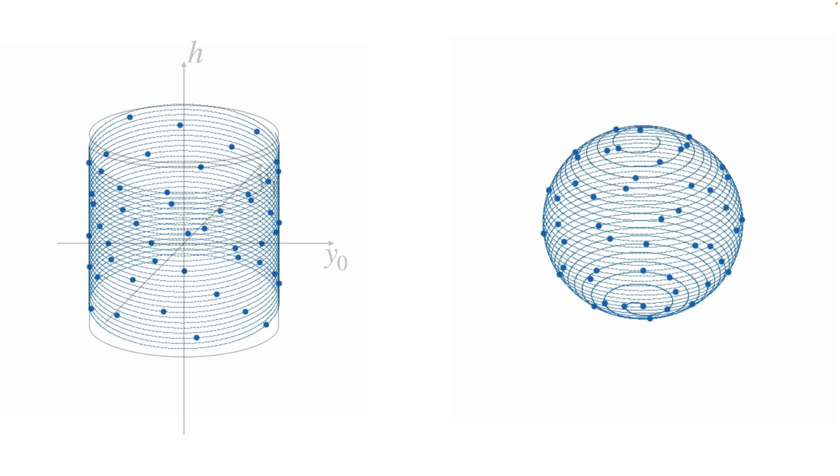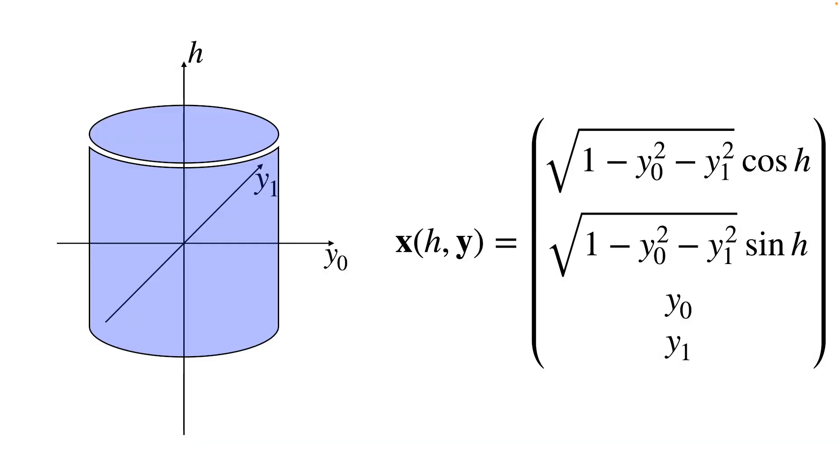For our problem this means, can we find a volume-preserving mapping from a convenient domain for sampling the 3-sphere?